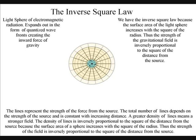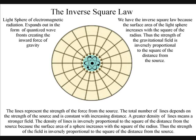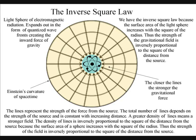We have the inverse square law, because the surface area of the light sphere increases with the square of the radius, thus the strength of the gravitational field is inversely proportional to the square of the distance from the source.